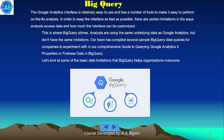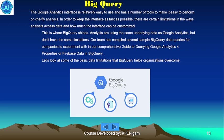The Google Analytics interface is relatively easy to use and has tools to make on-the-fly analysis simple. In order to keep the interface as fast as possible, there are certain limitations in the ways analysts access data and how much the interface can be customized. This is where BigQuery shines. Analysts use the same underlying data as Google Analytics but don't have the same limitations. Our team has compiled several simple BigQuery queries for companies to experiment with in a comprehensive guide to querying Google Analytics and Firebase data in BigQuery.